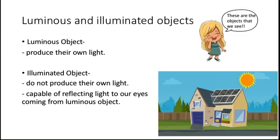On the other hand, a lot of objects are not capable of producing their own light, and those are called illuminated objects. Luminous objects produce their own light; illuminated objects do not. Now you might be thinking: if illuminated objects cannot produce their own light, and there is no light, how are we able to see them? That is the question that must be bothering you.